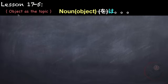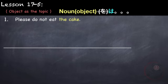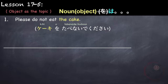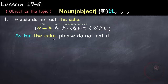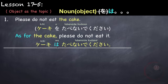Next is making the object or the receiver of the action as the topic. We normally mark the object with particle o, but if you want to make the object the topic, you can replace o with the particle wa. For example, 'please do not eat the cake' is normally: keiki o tabenaide kudasai. But to make the cake the topic, we say: keiki wa tabenaide kudasai.